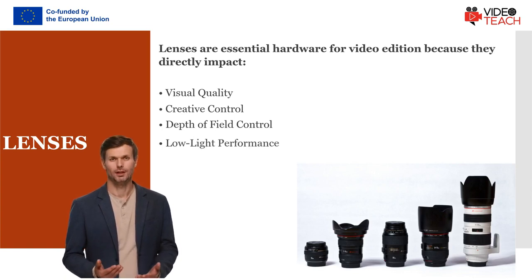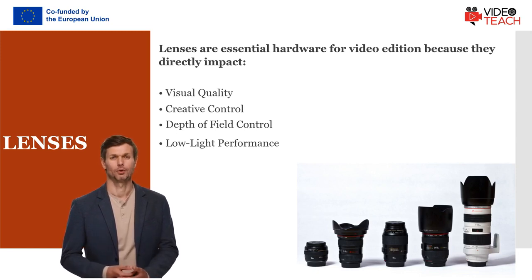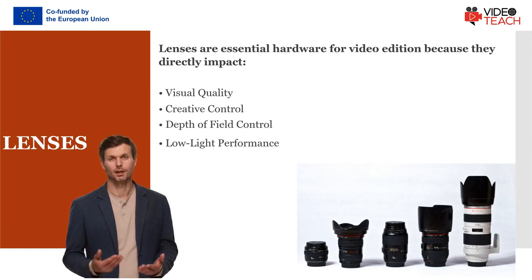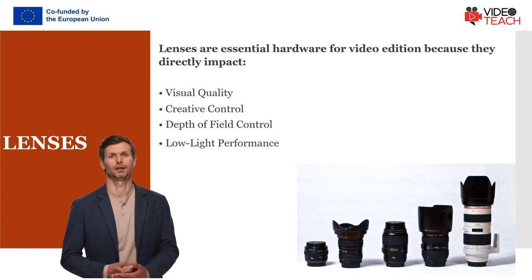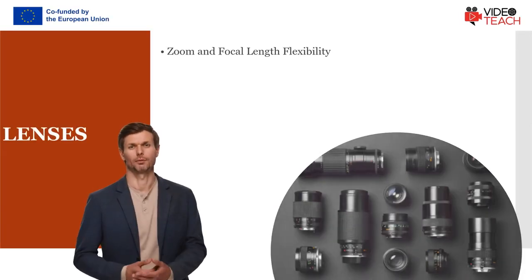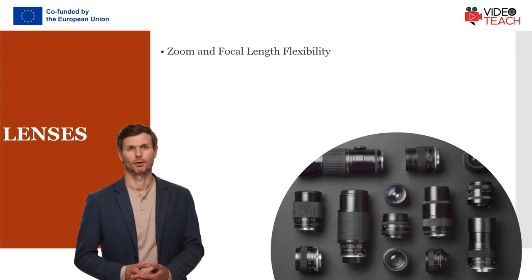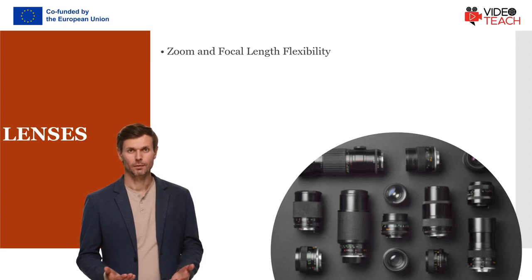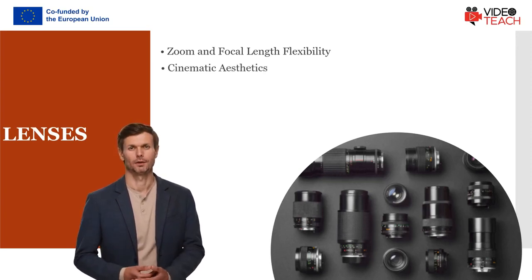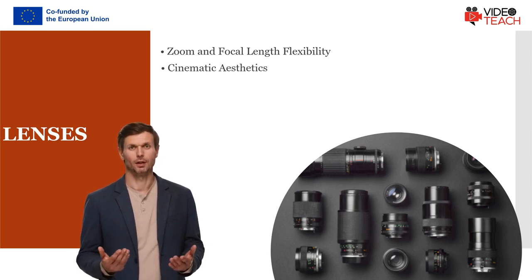Some lenses are designed for low-light conditions, and lenses with wider apertures can gather more light. Lenses with wide apertures also create a pleasing background blur, known as bokeh, which isolates subjects from their surroundings. Zoom lenses provide flexibility in framing shots, allowing smooth transitions between wide-angle and telephoto perspectives. Specific lenses are favored for achieving cinematic aesthetics, and prime lenses with wide apertures are commonly used for creating a cinematic look with beautiful background separation.